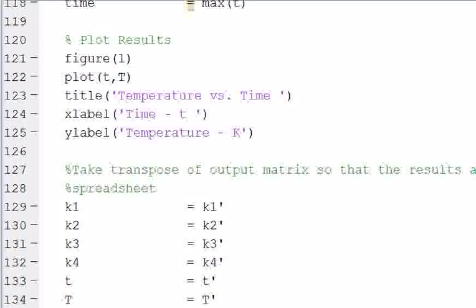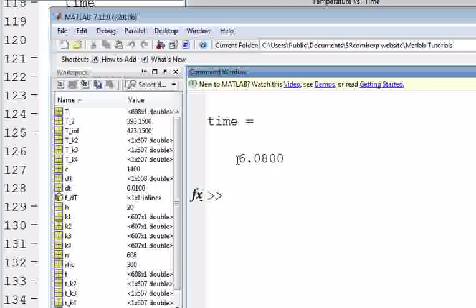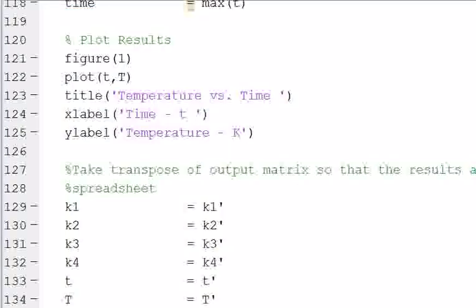Alright, so if I run this script, I can run it, and I will get an output that looks like this. You can see the temperature go up until it reaches our final temperature, and then the script ends. If I look at the MATLAB command window, I can see that it took 6.08 seconds for the material to reach whatever temperature I was looking at.